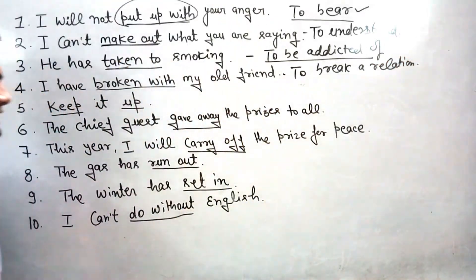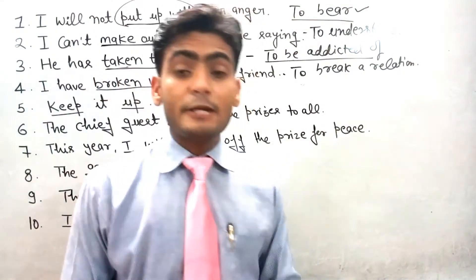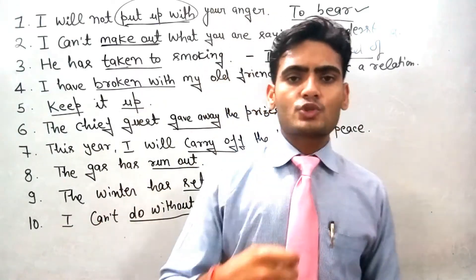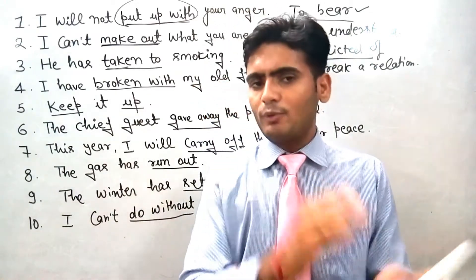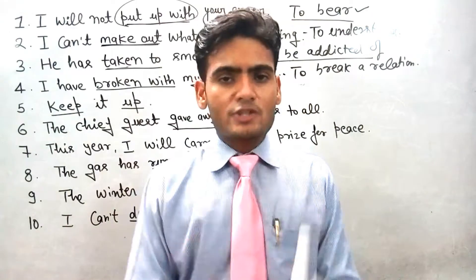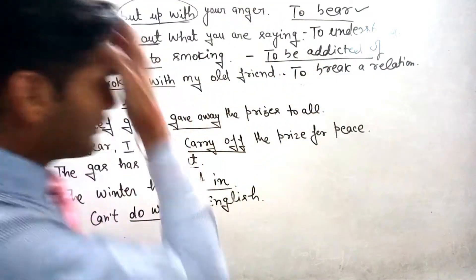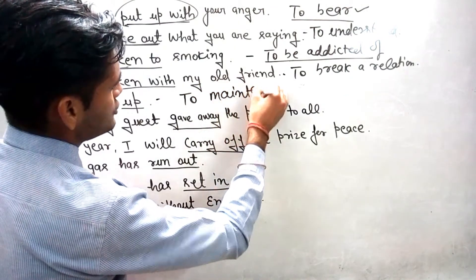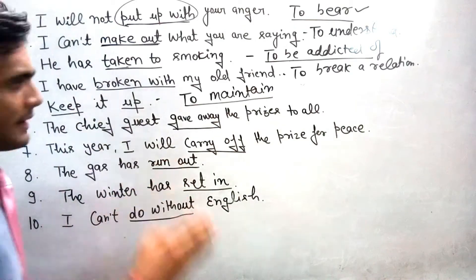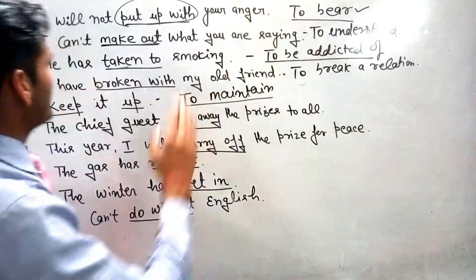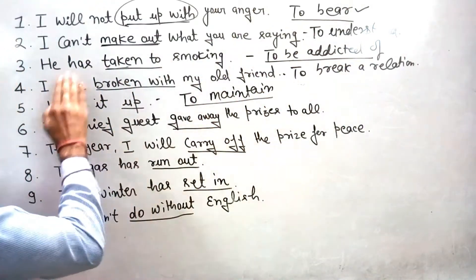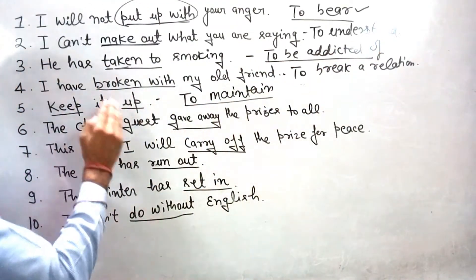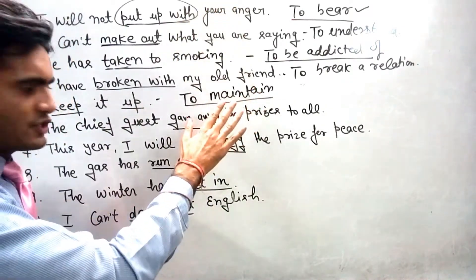पाँचवाँ phrasal verb है 'keep it up'. Keep it up means किसी चीज को बनाए रखना, maintain करना। कभी आपने class में अच्छे marks score किए होंगे तो teacher ने कहा होगा 'keep it up' — यानि इसे बनाए रखना। So keep up means: to maintain. तो पहले 5 phrasal verbs: put up with = to bear, make out = to understand, take to = to be addicted of, break with = to break a relation, keep it up = to maintain.